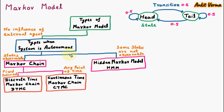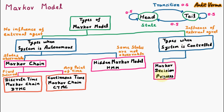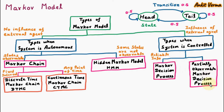In most books we will find these two types which are the main types of Markov Model. There is another category: types when the system is controlled — meaning it is influenced by an external agent. Based on this category, the Markov Model is of two types. The first type is Markov Decision Process, which is used when we have reliable information. The second type is Partially Observable Markov Decision Process, which is used when we don't have reliable information. So these are the types of Markov Model based on two categories.